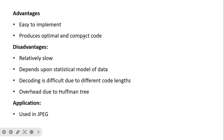Advantages of Huffman encoding: easy to implement, produces optimal and compact code. Disadvantages: relatively slow; depends on the statistical model of the data, so we need to calculate entropy to decide whether this compression type is appropriate; decoding is difficult due to different code lengths; overhead due to storing the Huffman tree. Application: Huffman encoding is used in JPEG — JPEG is a lossy compression technique but uses variable length encoding (Huffman coding) as one of its sub-steps. This concludes the discussion of two lossless compression techniques: packbit (RLE) encoding and Huffman encoding. In the next video, arithmetic encoding will be covered.